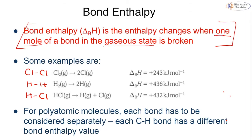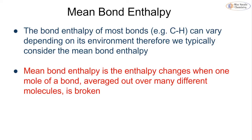For polyatomic molecules, each bond has to be considered separately, because every carbon–hydrogen bond, for example, will have a different bond enthalpy value depending on the nature of that bond and the molecule it's in. Because of this variation in bond enthalpy depending on the environment, we typically use what is called the mean bond enthalpy — another definition you need to know.